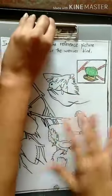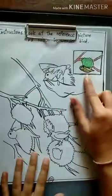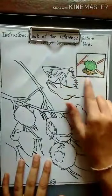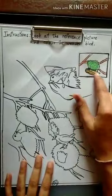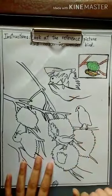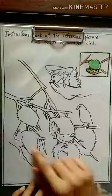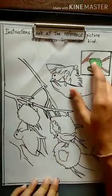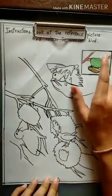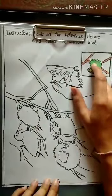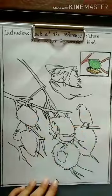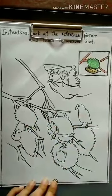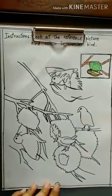What is the color of the weaver bird in the picture? It is slightly black, yellow, and brown. So we are going to use these colors to color the weaver bird. And since the nest is made of leaves and branches, the colors for the nest would be green and brown. Let's start coloring.